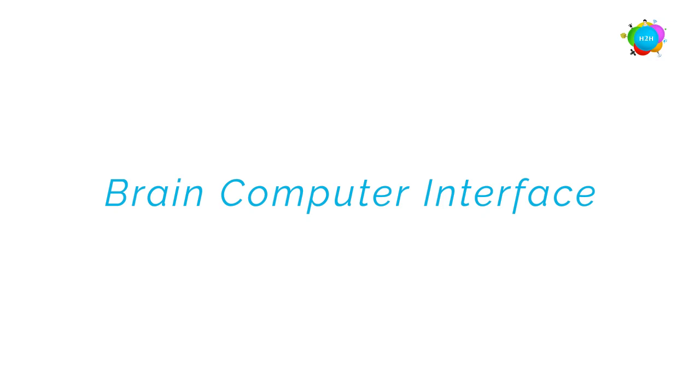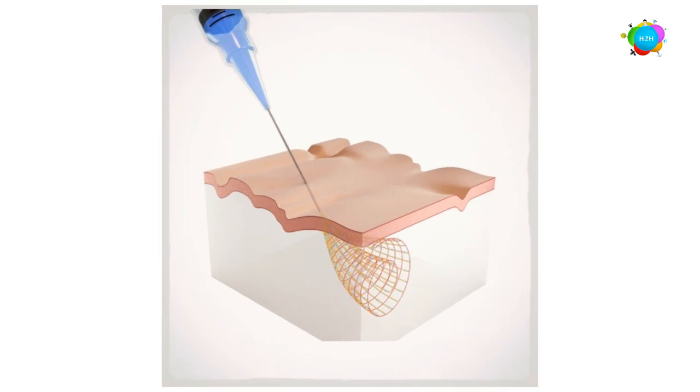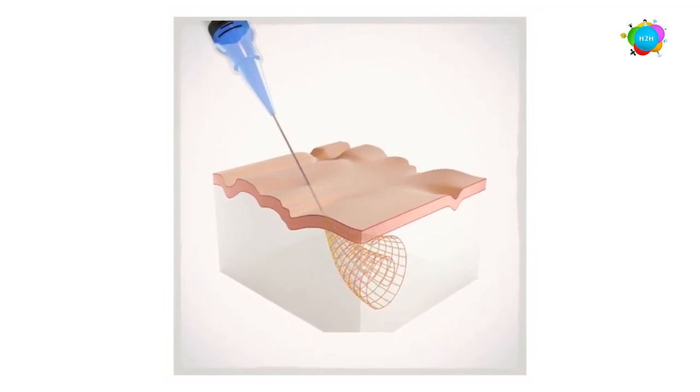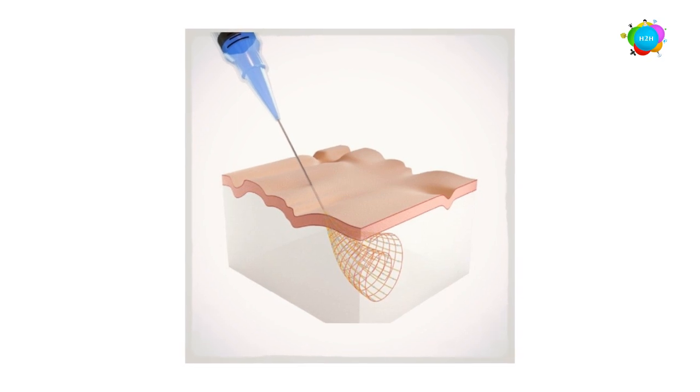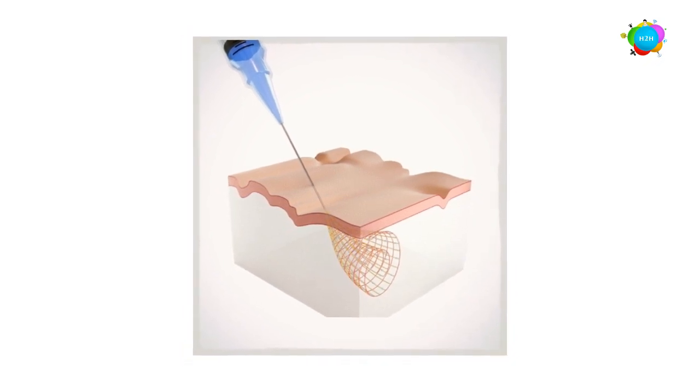What is Brain Computer Interface technology? If you don't have a skill, you can download it. Neuralink is a company that Elon Musk has started. This is an ultra-thin mesh with a needle in the brain. There are very tiny electrodes connected to a computer. We can record this. If we change the mood, we can release certain chemicals in the Neuralink. We can change the brain.